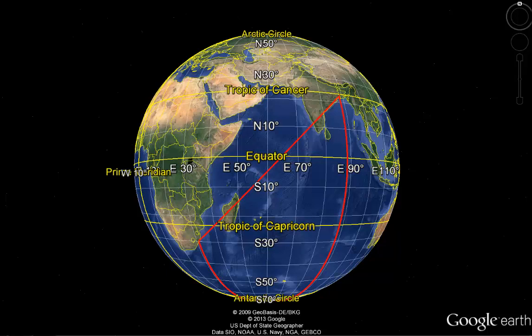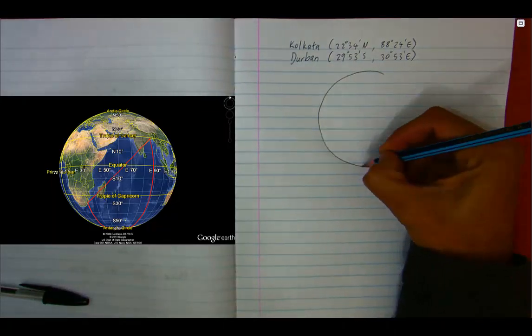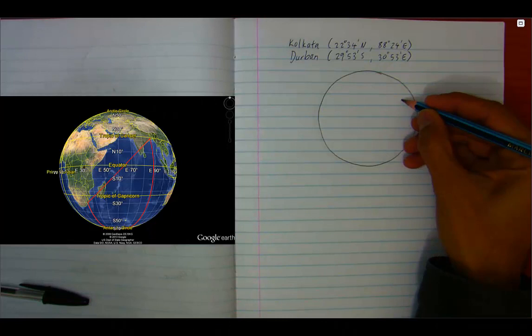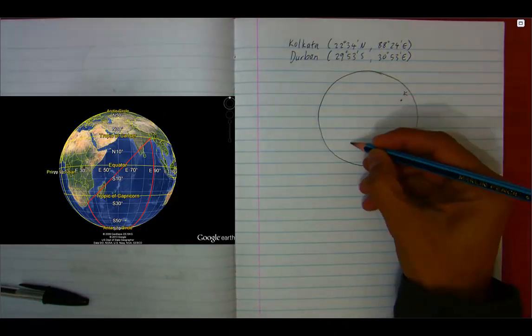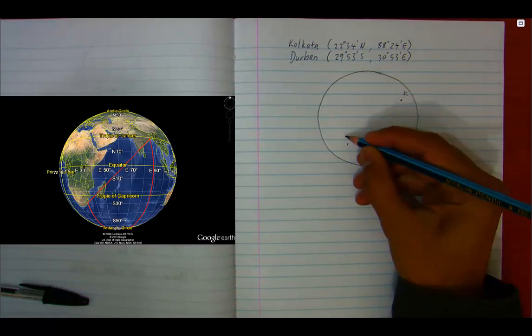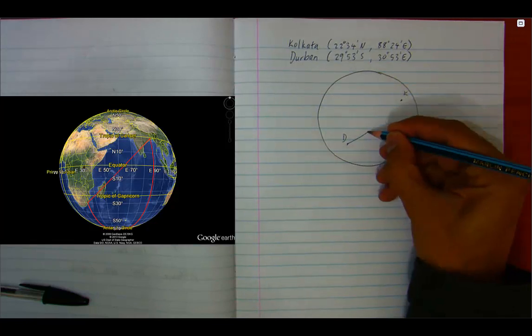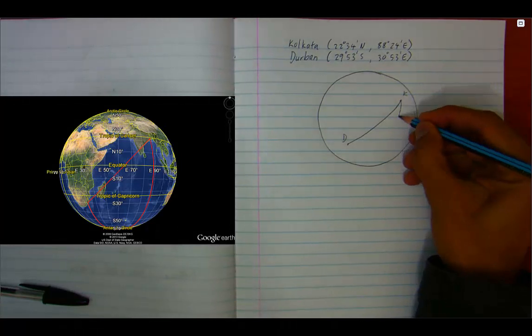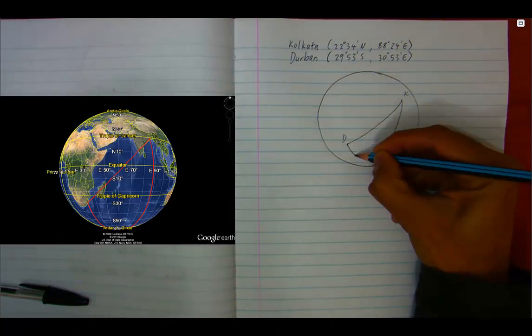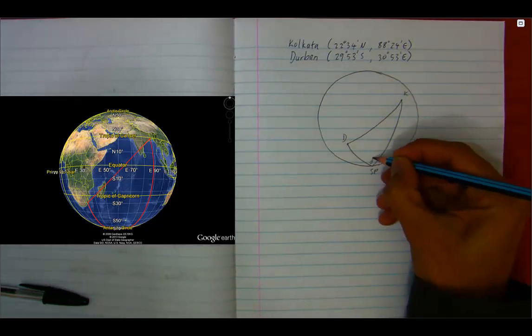Let me now try and draw this picture. Here is Kolkata at 22 north and 88 east. Durban at 29 south and 30 east. That's the great circle path between them. Let's join Kolkata to the south pole along its meridian and do the same for Durban. In my spherical triangle,